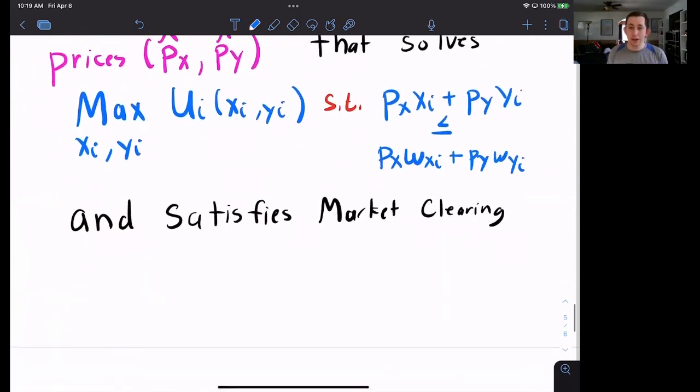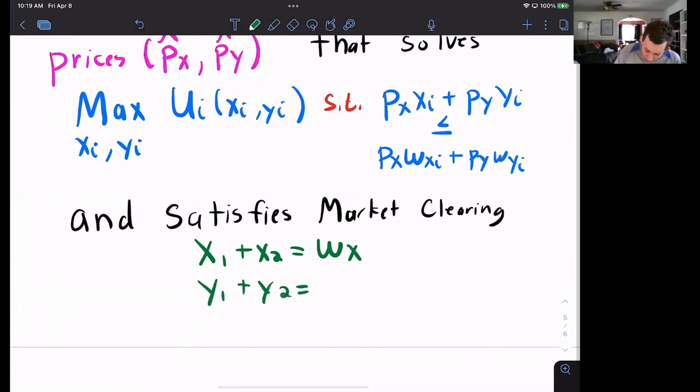What is market clearing? Market clearing means that if we trade, we have to go home with no more and no less than what we showed up with or what was in our boxes. So X1 + X2, the allocation of X, has to equal the total amount of X that the people were endowed with (Wx). And similarly for Y, Y1 + Y2 has to be equal to the total endowment of Y in this economy (Wy).